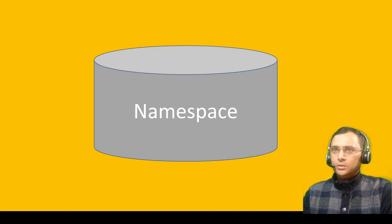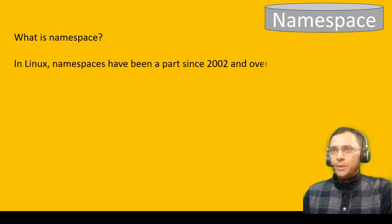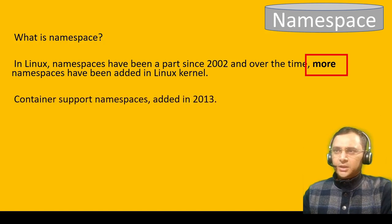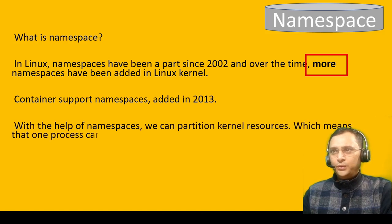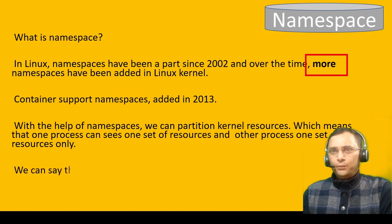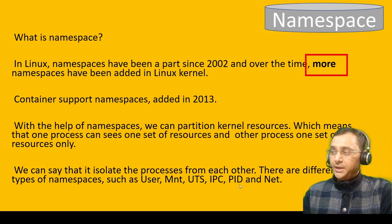The next topic is namespace — also a core component of the Linux kernel. So now the question is: what is namespace? In Linux, namespaces have been a part since 2002, and over time more namespaces have been added to the Linux kernel. Container support for namespaces was added in 2013, which is the reason namespace is vital to know about. With the help of namespaces, we can partition kernel resources, meaning one process can see one set of resources and another process can see a different set of resources only — we can say it isolates processes from each other.